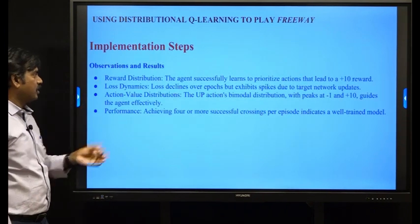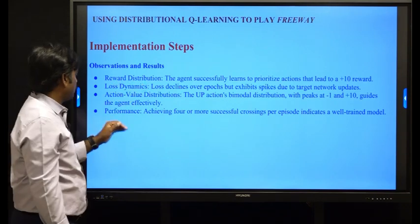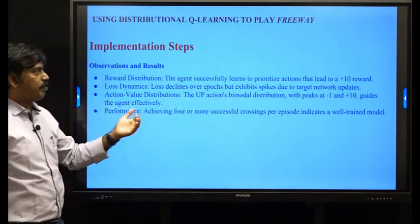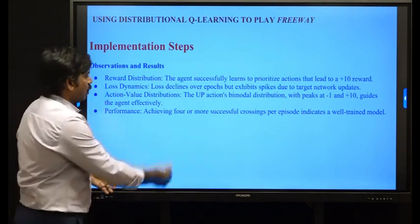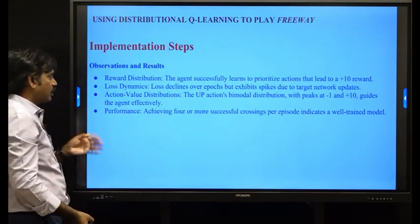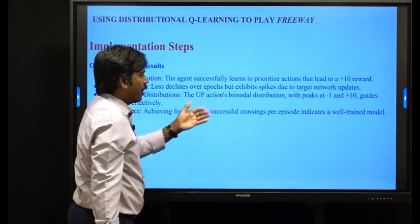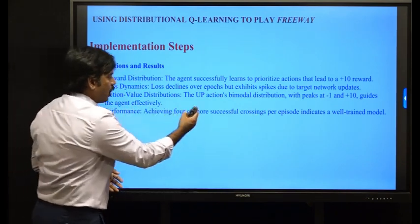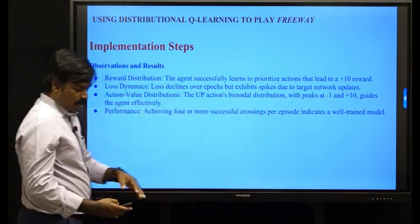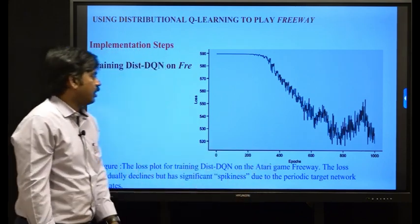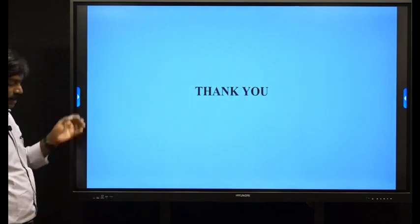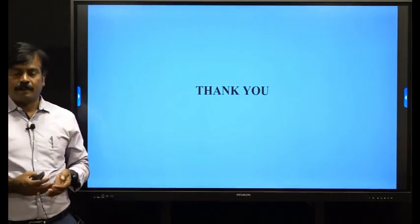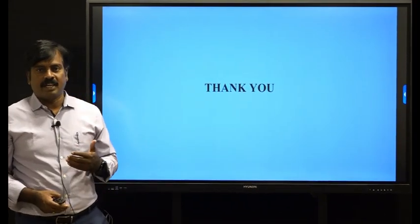Key observations include: the agent successfully learns to prioritize actions leading to a plus 10 reward. The loss declines over epochs but exhibits spikes due to target network updates. The action value distribution shows a bimodal distribution with peaks at minus 1 and plus 10, which guides the agent effectively. Achieving 4 or more successful crossings per epoch after 400 epochs indicates a well-trained model. The distributional DQN is very suitable for solving complex environments in reinforcement learning, as demonstrated with the Freeway Atari game.